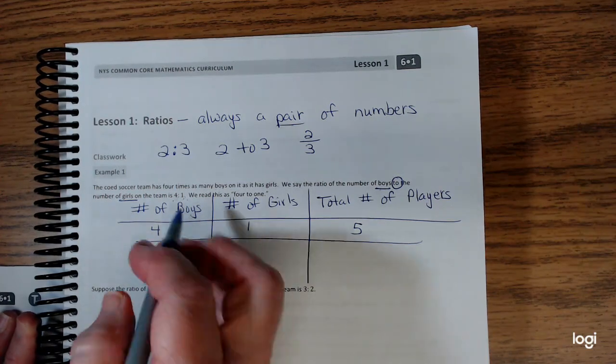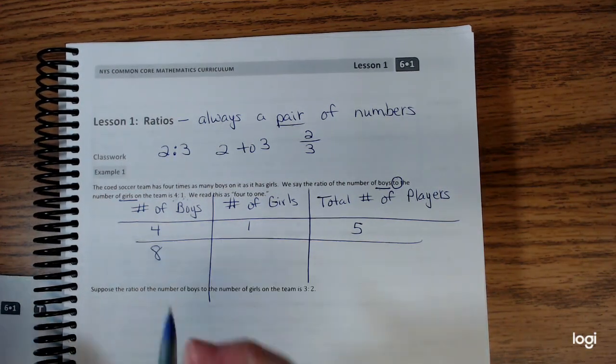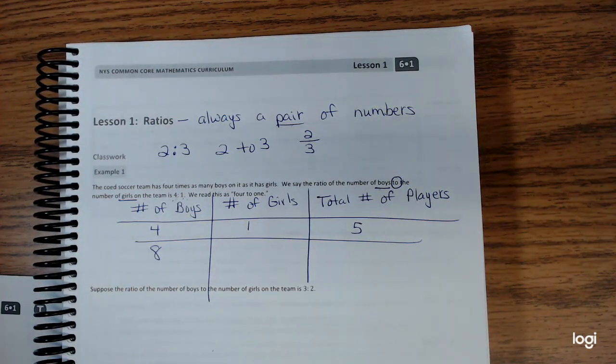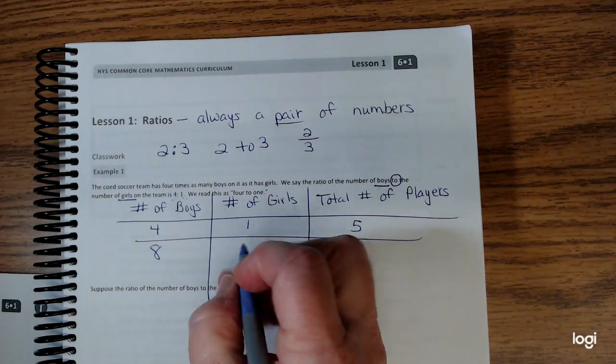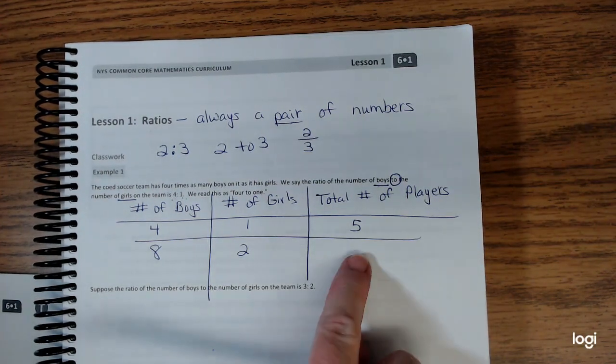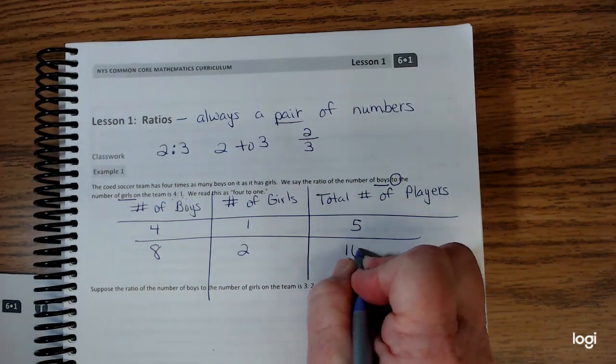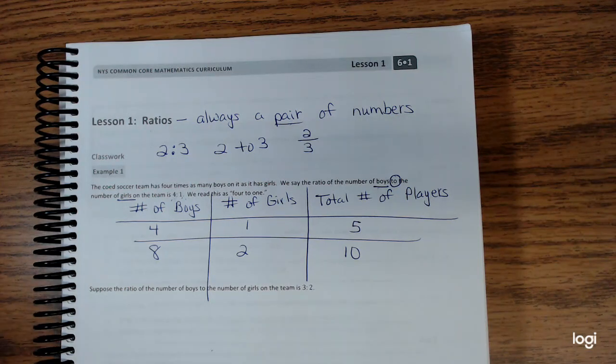What would happen if I doubled that? Keeping the ratio consistent, if I had eight boys, how many girls would that make? Well, for every four boys there's one girl, so there would be two girls, which leads to a total of ten players.